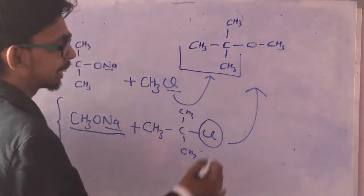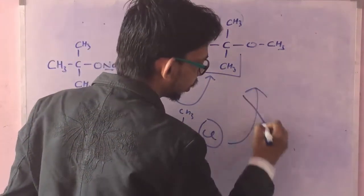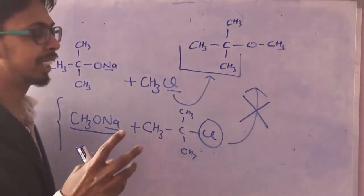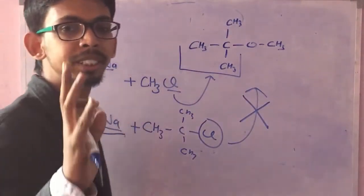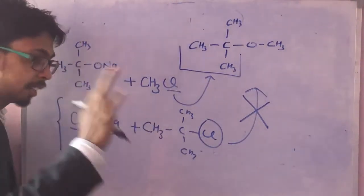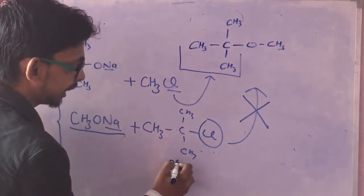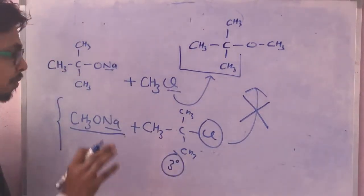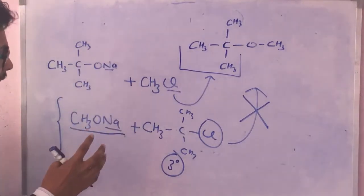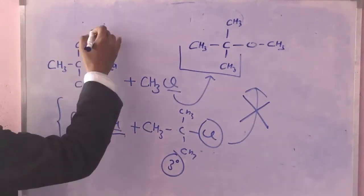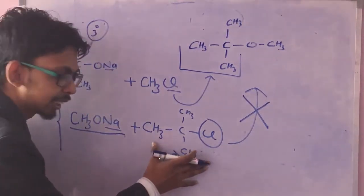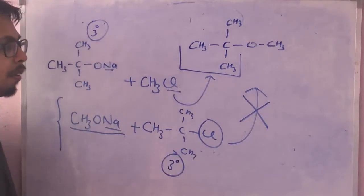But the answer is no. And this is the exception or limitation of Williamson's ether synthesis: in this method we can never use a tertiary alkyl halide. If we have to make something tertiary, we'll be using tertiary alkoxide. And the answer is because this tertiary alkyl halide will undergo elimination rather than substitution.